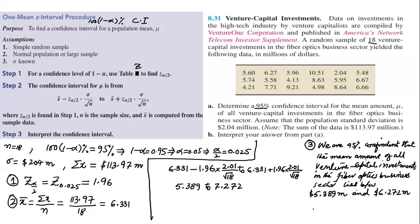So it means the mean of the population lies between 5.389 and 7.272.